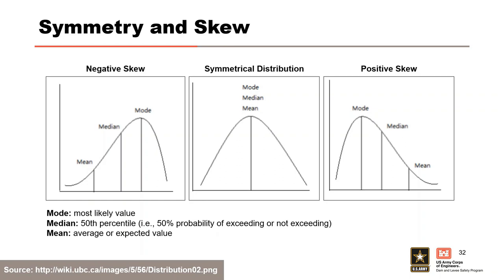Triangular and PERT distributions, along with the log normal distribution, can be skewed. When there is negative skew, the mode or most likely value will be greater than the mean; when there is positive skew, the mode will be less than the mean. When a distribution is symmetrical, the mode, median, and mean will all be equal. The mean is the centroid or center of mass of the distribution.